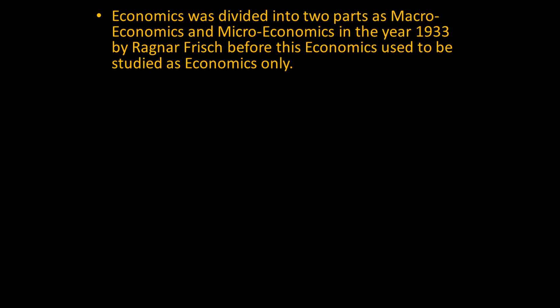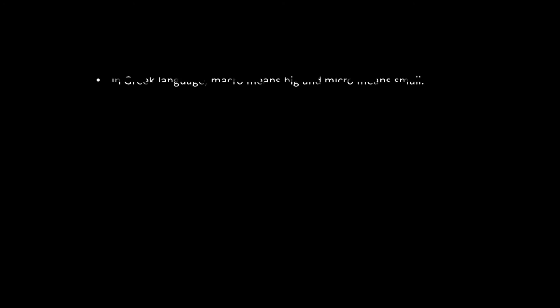Economics was divided into two parts — macroeconomics and microeconomics — in the year 1933 by Ragnar Frisch. Before this, economics used to be studied as economics only. In Greek language, macro means big and micro means small.